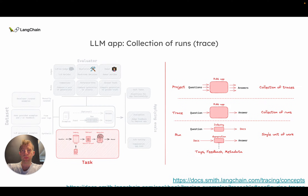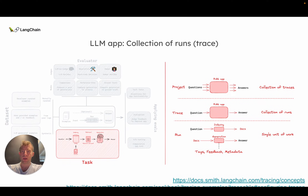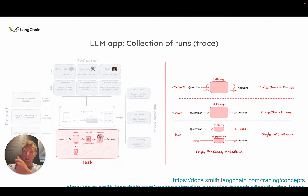So let's actually build this up. Let's say I have an LLM app — I have a task. RAG is a very popular use case. There is an index, you do retrieval, and then you do generation based on the retrieved documents to produce an answer. So it's question in, answer out.